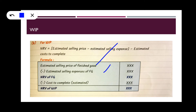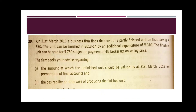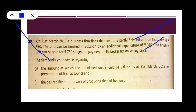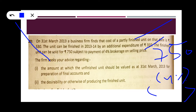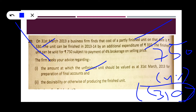Let us see a WIP example. On March 31st, a business firm finds that the cost of a partly finished unit is 530 rupees. This unit can be finished by an additional expenditure of 310 rupees and can be sold in the market for 750 rupees on payment of 4% brokerage. So NRV = 750 minus 4% of 750 (which is 30) minus cost to complete 310 = 750 − 30 − 310 = 410.